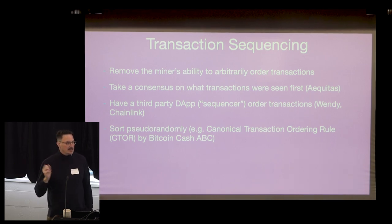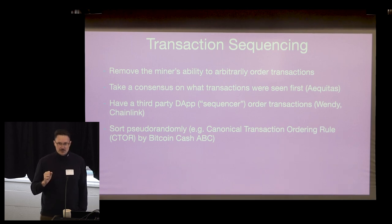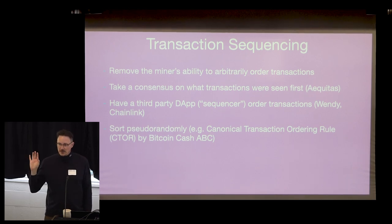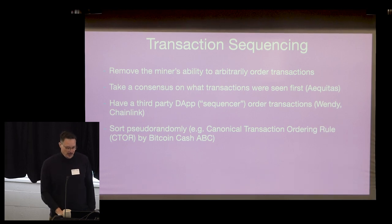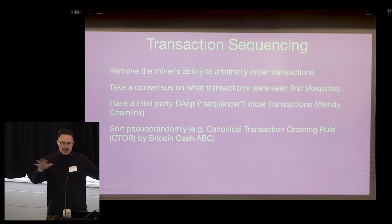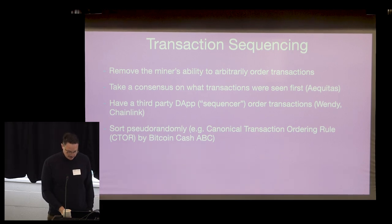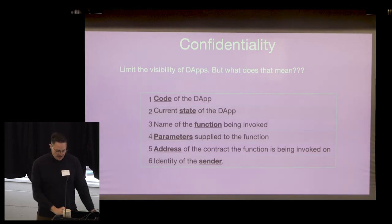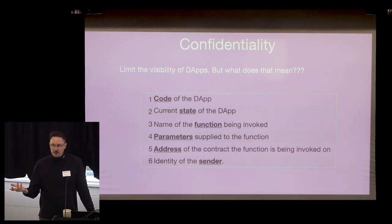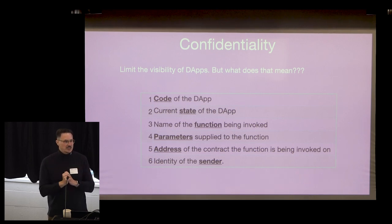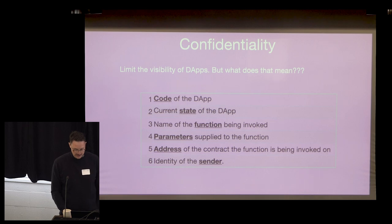You could also use a third party like Chainlink to handle sequencing, using what are called sequencers. Another option is to just randomize the order — a fringe Bitcoin fork called Bitcoin Cash ABC does this — but that doesn't completely solve front-running because you can spray transactions and hope they randomly end up ahead of the target transaction.